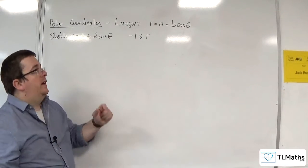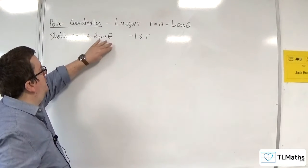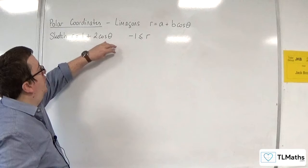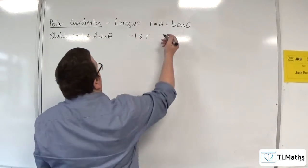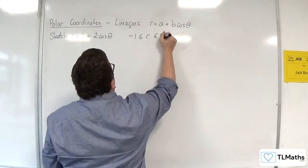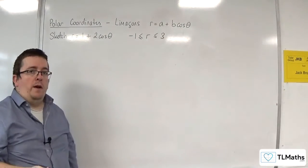And the largest that r can go is if the cosine theta is 1. 1 plus 2 lots of 1. So 1 plus 2 is 3. So that means that r is going between minus 1 and 3.